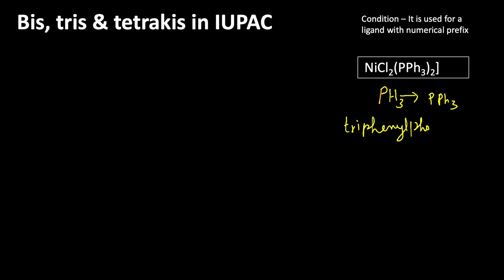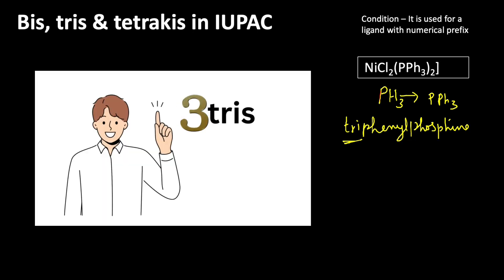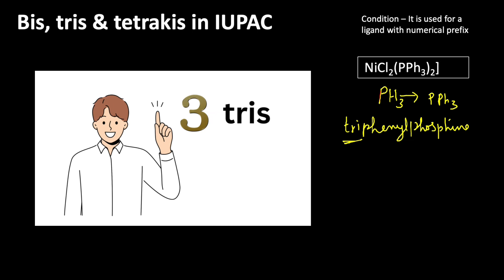In the name itself you can find that the prefix 'tri' is already present. So whenever a ligand already contains a numerical prefix, we will use bis, tris, or tetrakis instead of the simple di, tri, or tetra.